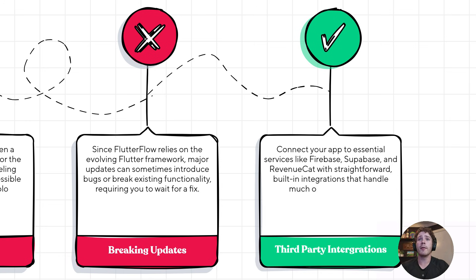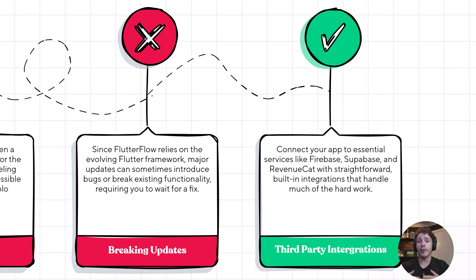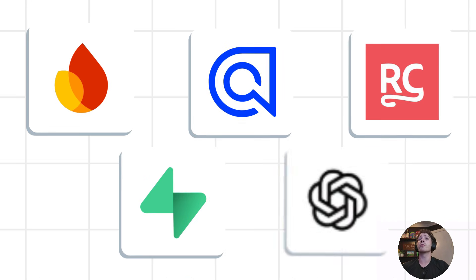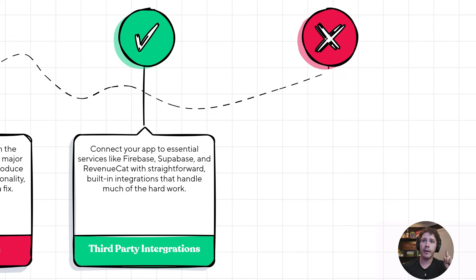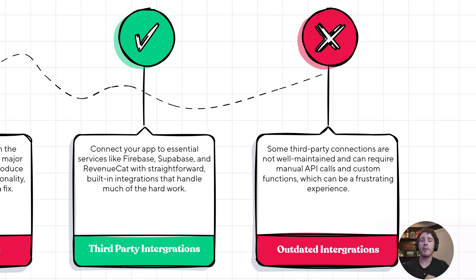On the bright side, Flutter Flow does have a ton of third-party integrations — Firebase, Supabase, Algolia, RevenueCat, OneSignal. It really does take a lot of the legwork out of having to use these third-party necessities, and they integrate pretty seamlessly with Flutter Flow. But not all integrations are made the same. There are often outdated integrations that are not well maintained and require manual API calls or custom functions or actions to use their full scale.